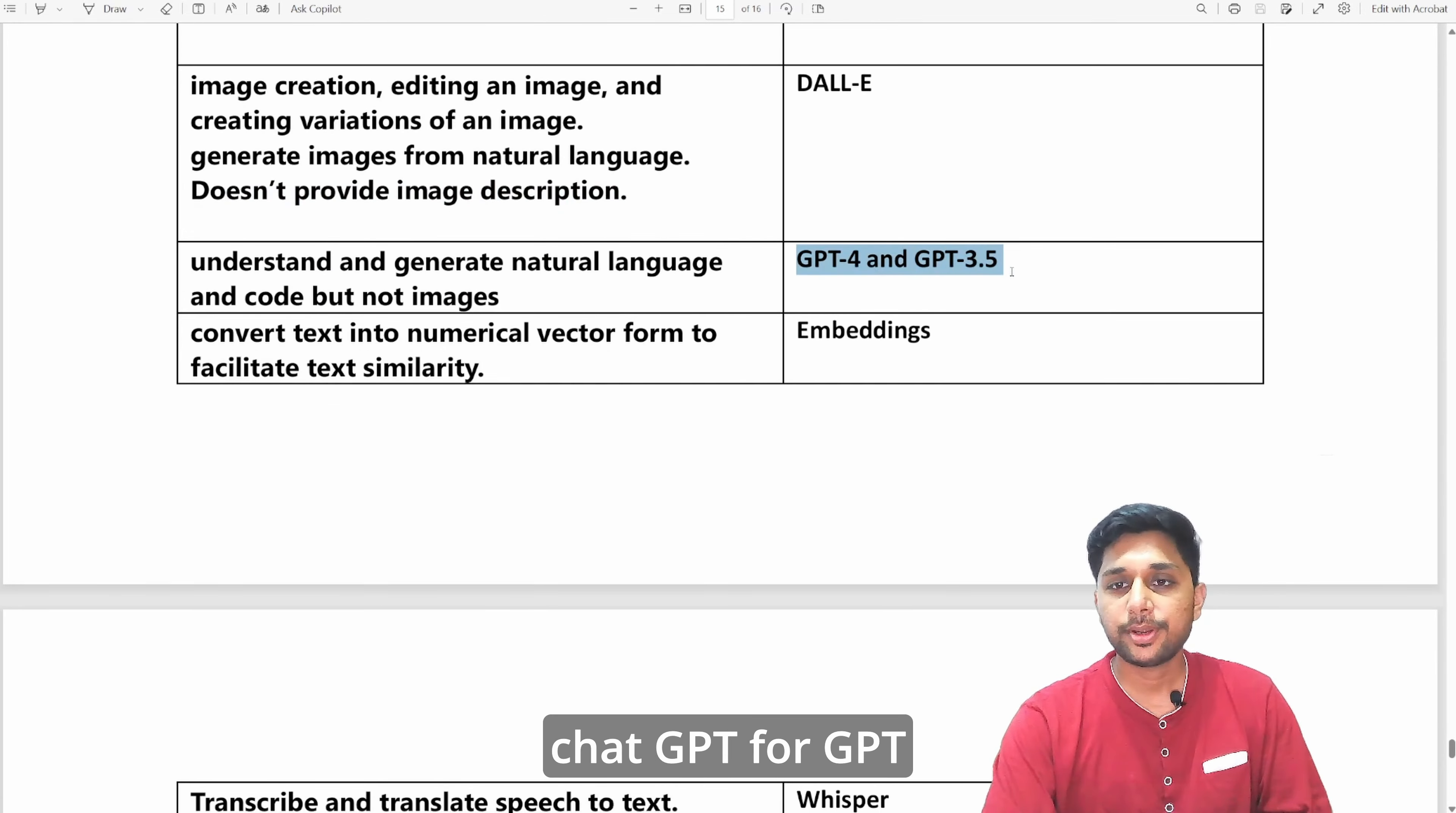What about ChatGPT-4, GPT-4, GPT-3.5? Basically it understands and generates natural language and code, but it does not generate images. As we see with ChatGPT, we can't generate images using these GPT-4 and GPT-3.5 which currently ChatGPT is utilizing.